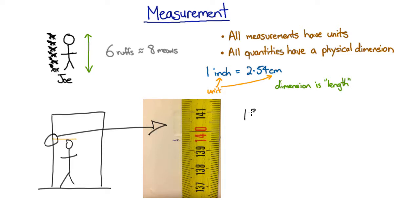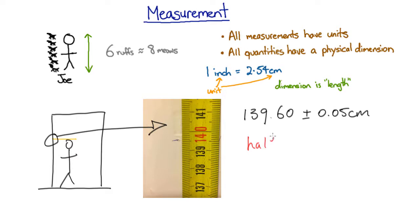The first type of uncertainty in the measurement is dictated by the fineness of the divisions on the ruler. This measuring tape has lines spaced one millimeter apart and at the very best I can read off a measurement to within about half a millimeter. So I should record the height as 139.60 centimeters plus or minus 0.05 centimeters. This specifies the finite precision of your measuring instrument.